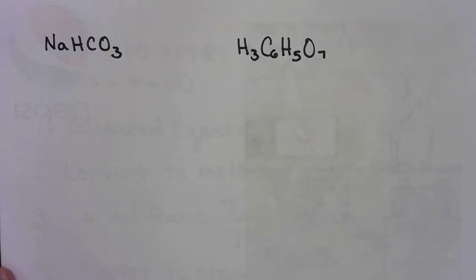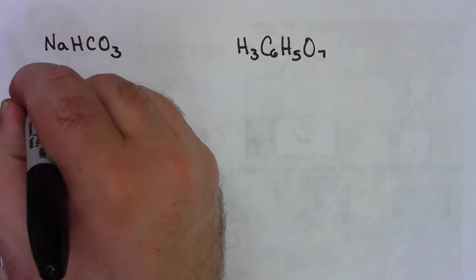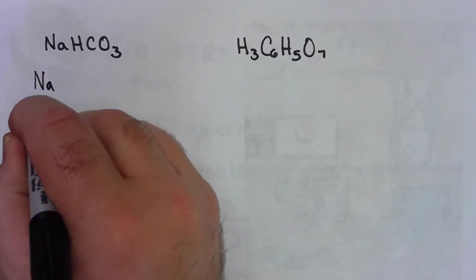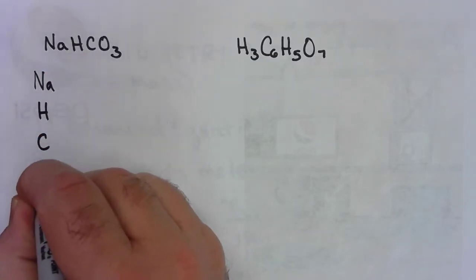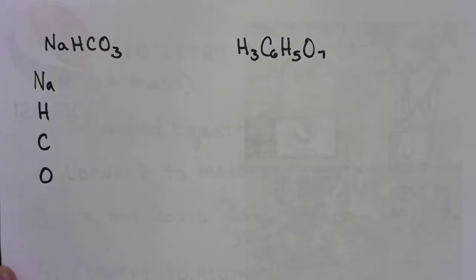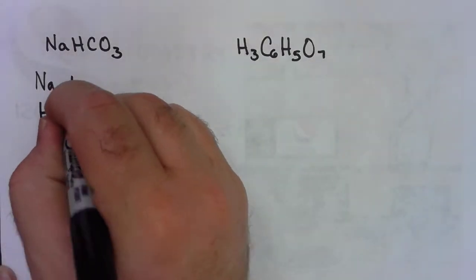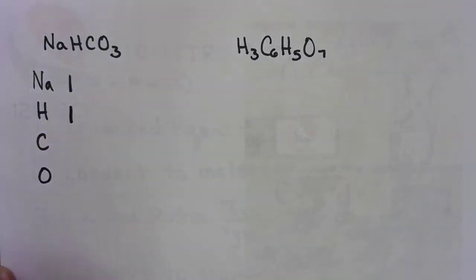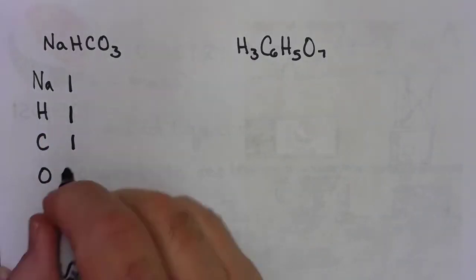Here are my two compounds that I'm going to find the molar mass of. They're the ones I've been using in the lab in this series of videos. First one is sodium bicarbonate, and the second one is citric acid. I have my students list all of the elements that are in the formula. We've got one sodium, one hydrogen, one carbon, and three oxygens.